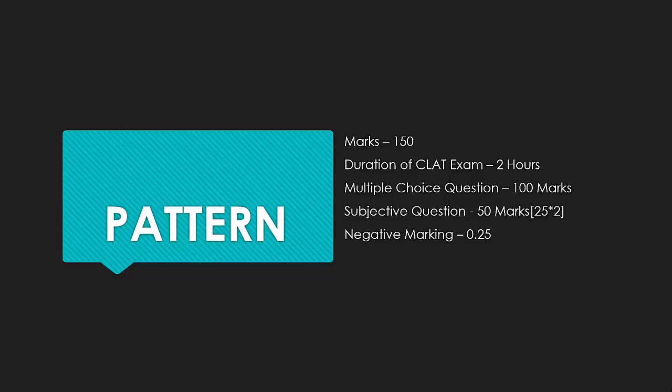There will be two subjective questions asked, and each subjective question will carry 25 marks — so 25 into 2 equals 50 marks for the subjective, giving 150 marks total. Negative marking is 0.25, and that applies to the objective questions. This is the general pattern for the CLAD PG exam.